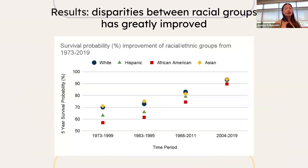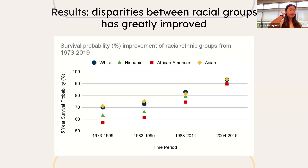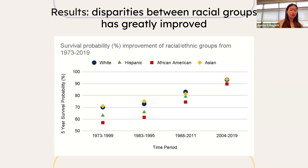First, I wanted to see how racial disparities in the United States have changed over time. This graph shows the survival rate of each race during four separate time periods: 1973 to 1999, 1983 to 1995, 1988 to 2011, and 2004 to 2019. I found two main conclusions: first, the overall survival for each group has shown a steady increase; and second, the disparities between racial groups have shown great improvement. In the first time period, survival for Asians was 71% while for Blacks it was only 57% — a 14% difference. Most recently, survival for Asians was 93% while survival for Blacks was 89%, which is only a 4% difference. So both groups showed improvements in survival and so did the disparity.